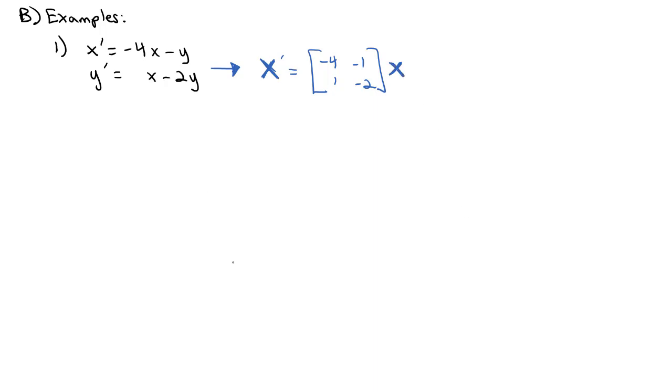We'll take the determinant of negative 4 minus lambda, negative 1, 1, and negative 2 minus lambda. That's negative 4 minus lambda times negative 2 minus lambda minus negative 1, which becomes plus 1, equals 0. Multiplying out, we get 8 plus 4 lambda plus 2 lambda plus lambda squared plus 1 equals 0.